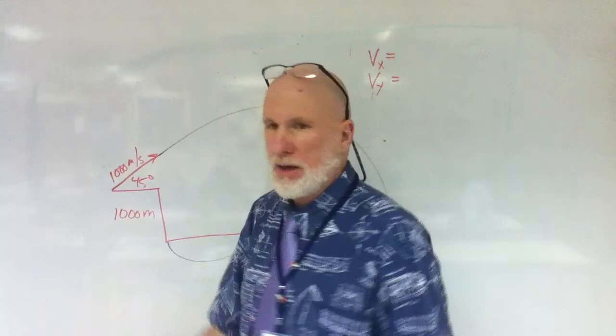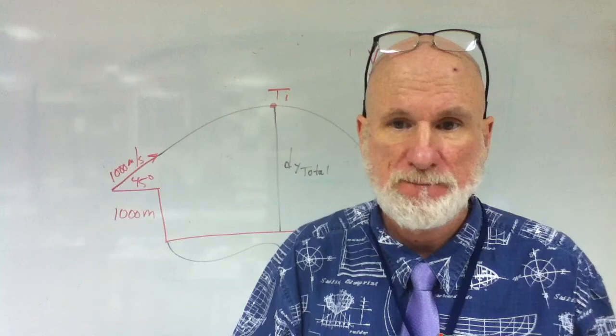Cosine, 1,000, cosine or sine 45 is what? 707. So, it's going to be 707 for each, right?